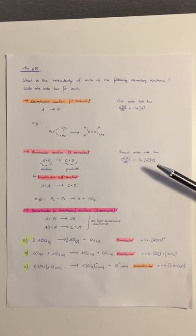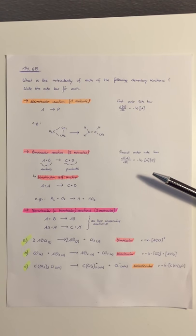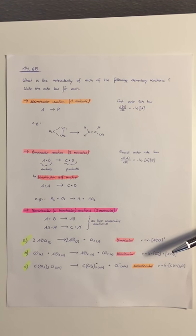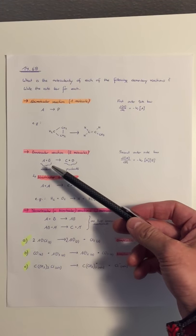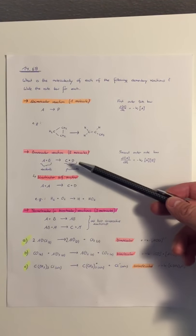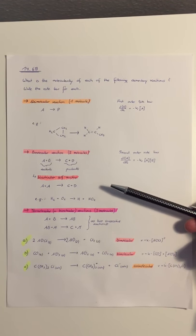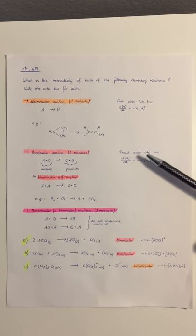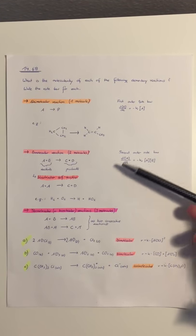Second, we got the bimolecular reactions. We got two molecules included in the reactions. We got reactant A and B and they are reacting to the products C and D, and this is the second order rate law as you can see here.